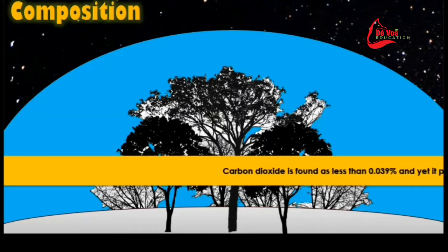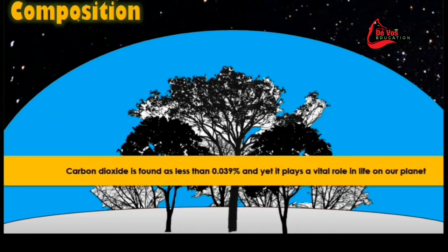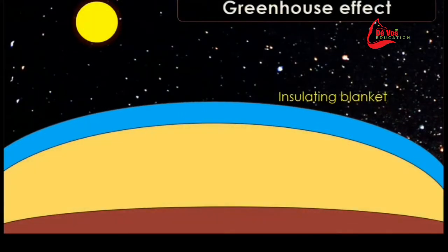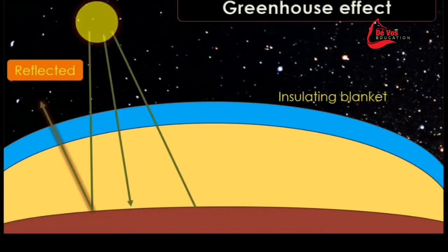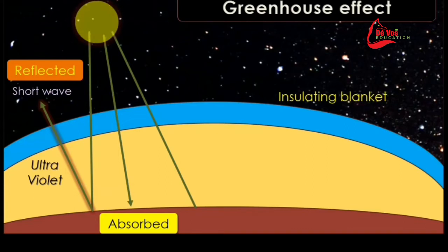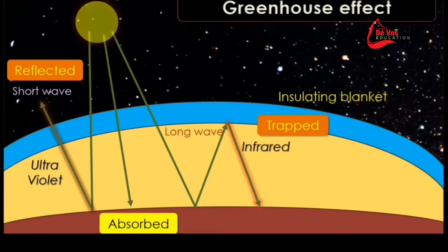Carbon dioxide is found at less than 0.03 percent and yet it plays a vital role in life on our planet. In the greenhouse effect, the light that travels from the sun can undergo a few things. The first is that light gets reflected back into the outer atmosphere — usually short wave light or ultraviolet light. Some of it gets absorbed by the surface, heating the surface, and some of it gets reflected back into the atmosphere as long wave light or infrared light.